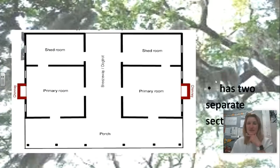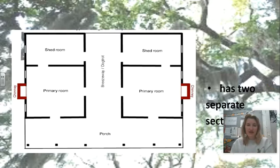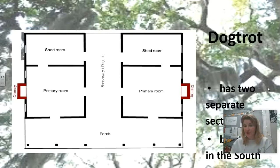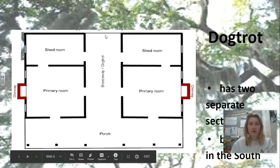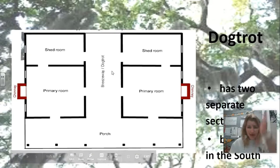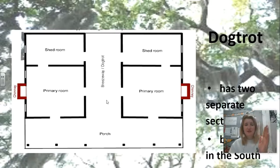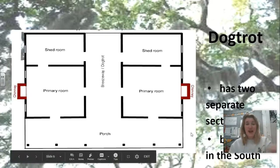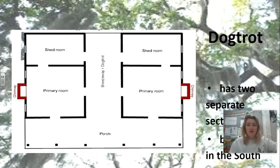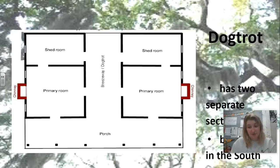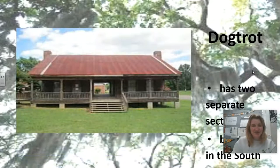This one's really rare. It has two separate sections — one piece on one side and another on the other side — and it's usually built in the south. It's called a dog trot. The reason it's called that is because it has this open porch situation right in the middle of the house, literally separated into two pieces with a porch running through the middle. The reason for this is to get air moving through, because the south is really hot, humid, and nasty. That's the purpose of a dog trot house. Here's what one looks like — it's kind of cool.